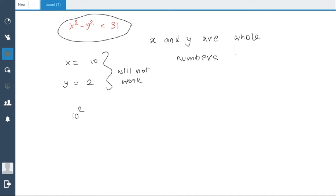x by 10 you get 10², that's 100, minus 2², so that's 100 minus 4. That's 96. So clearly 96 and 31 are not the same, so they don't satisfy this equation. We want to find out numbers which do satisfy this equation.